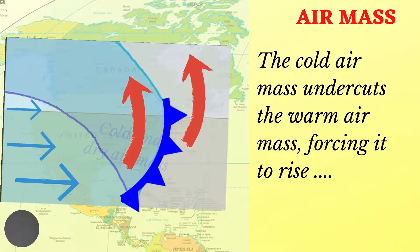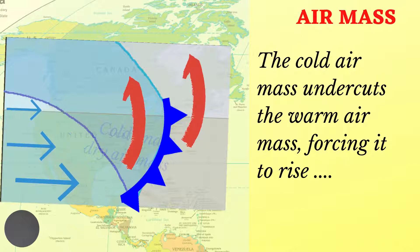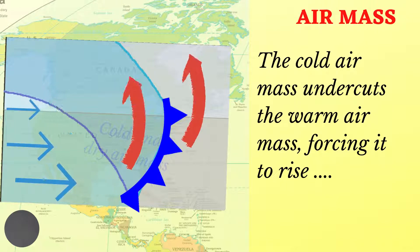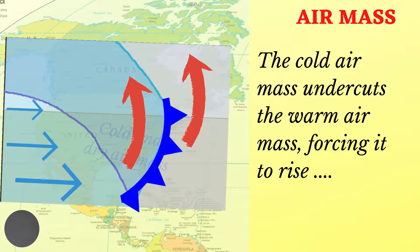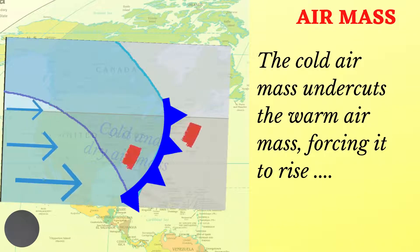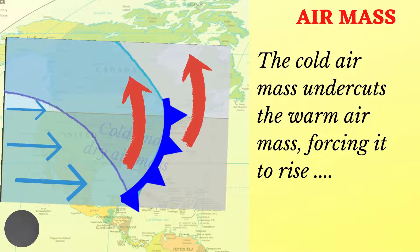The cold air mass, which has a higher density, will begin to undercut the warm air mass and therefore forces it to rise.